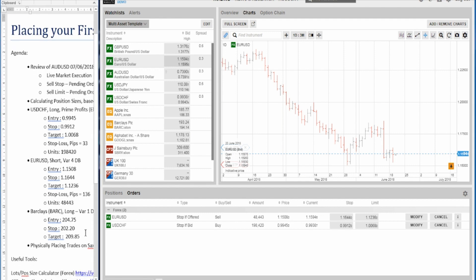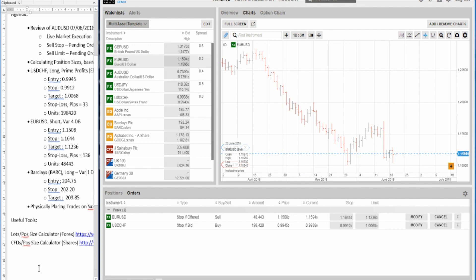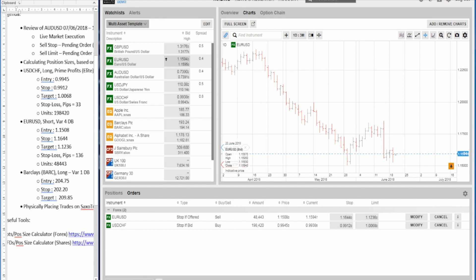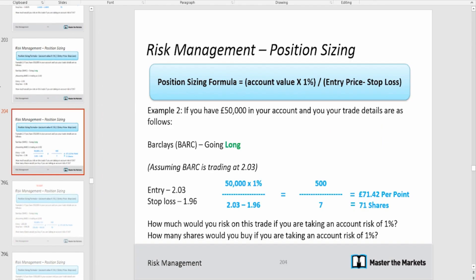The final opportunity is a stock trade — a Variation 1 Dynamic Breakout on Barclays, going long. To calculate position size, I use the CFD position size calculator. I've also referenced the Traders Base Camp manual, which shows the risk management formula to work out how many shares to buy or sell. For those who haven't attended the two-day workshop or bought the package, you can get it at traderstarterpack.com.